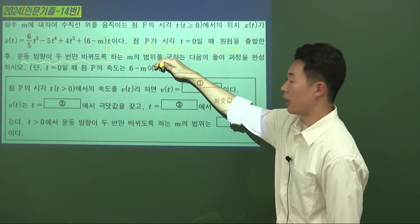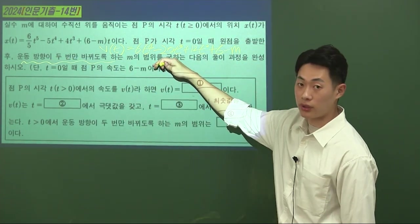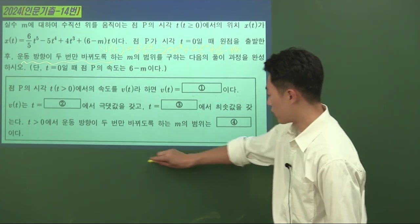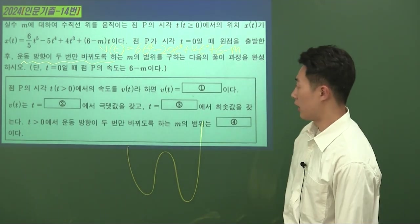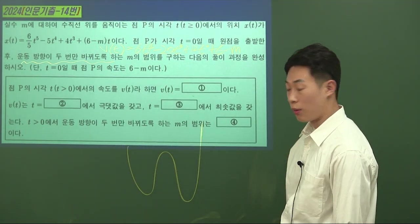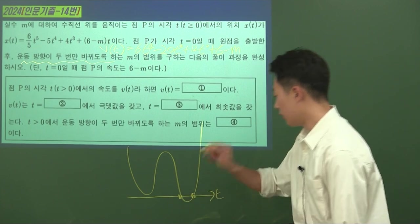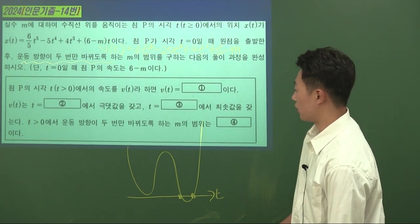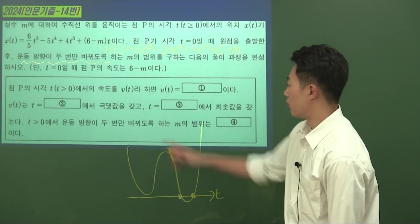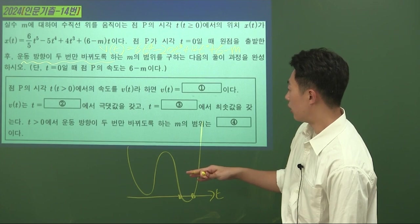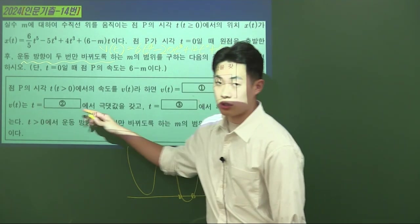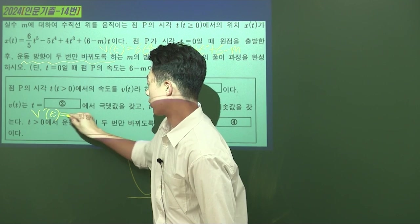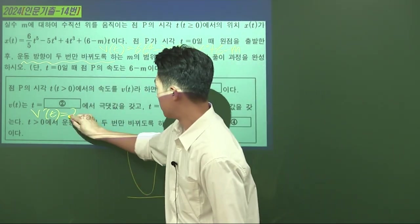마이너스 사인 세타와 마이너스 사인 세타 두 개를 더하면 마이너스 2 사인 세타는 5분의 4입니다. 약분하면 사인 세타는 마이너스 5분의 2임을 알 수 있습니다. 뒤에 있는 사인과 코사인 항들은 통분해서 정리합니다. 코사인은 우함수이므로 코사인(-세타) = 코사인 세타가 되고, 통분 과정에서 분자는 코사인 제곱과 사인 제곱이 되어 1이 됩니다. 최종적으로 사인 세타분의 1만 남아 마이너스 2분의 5가 됩니다.